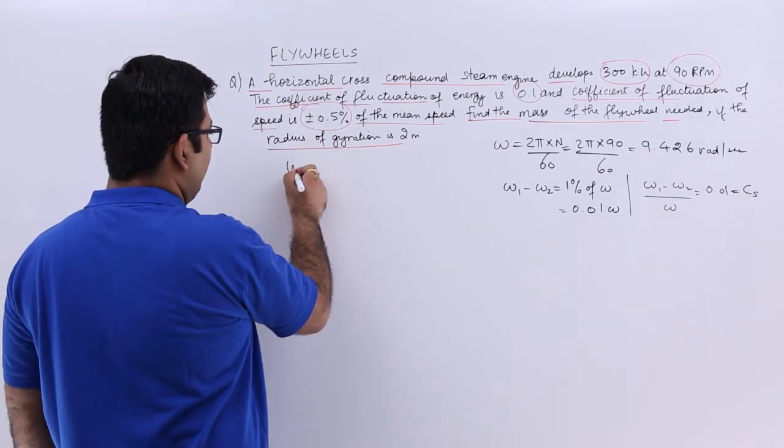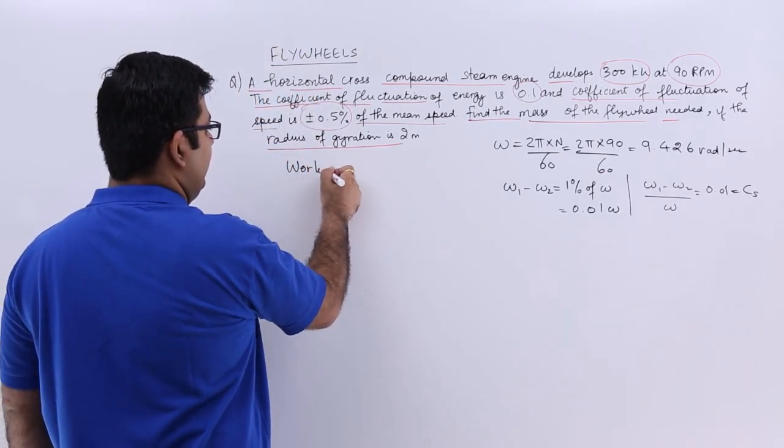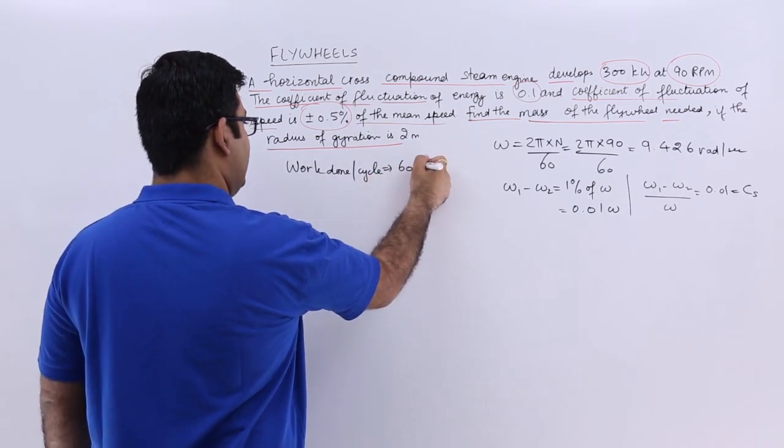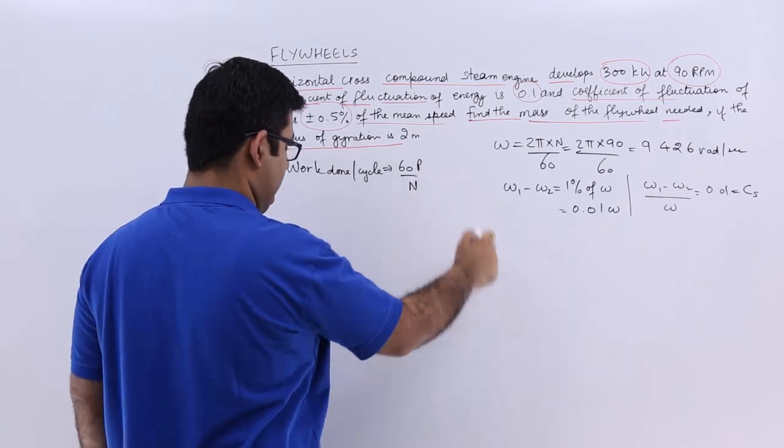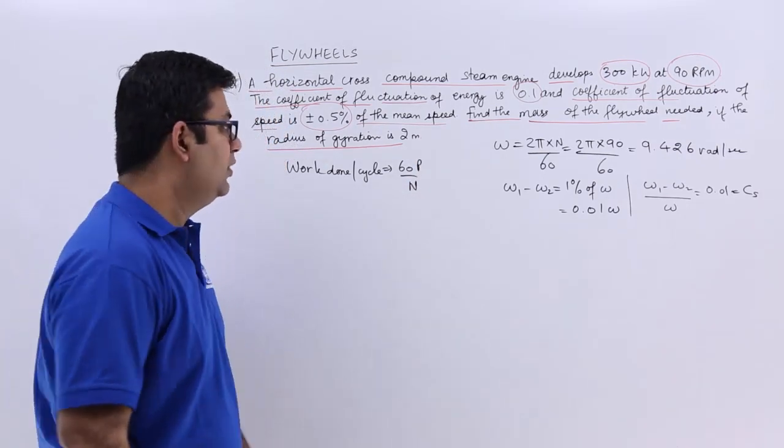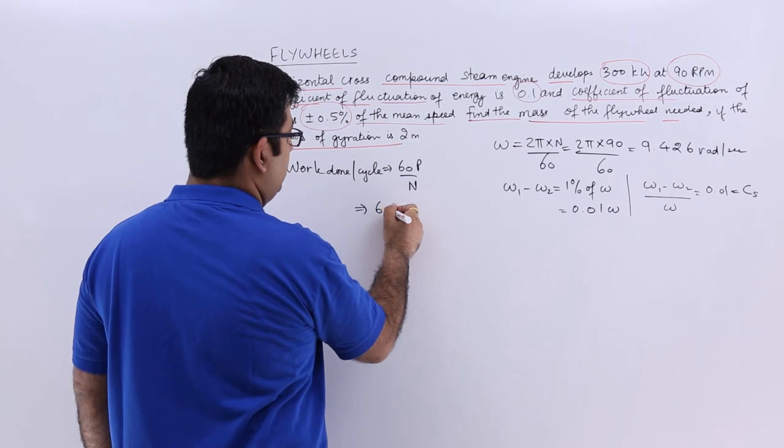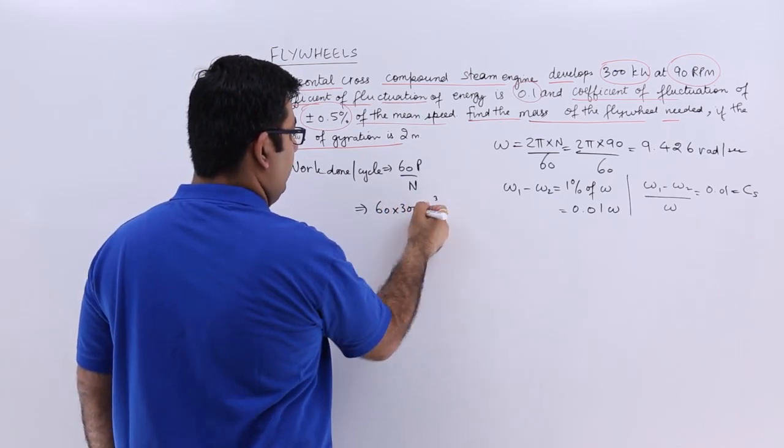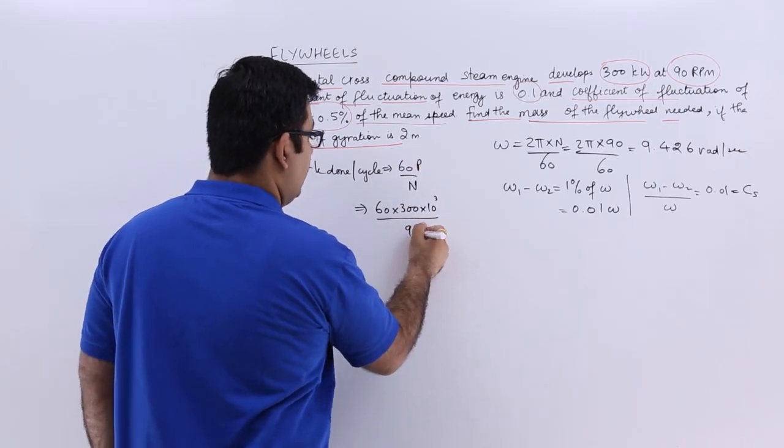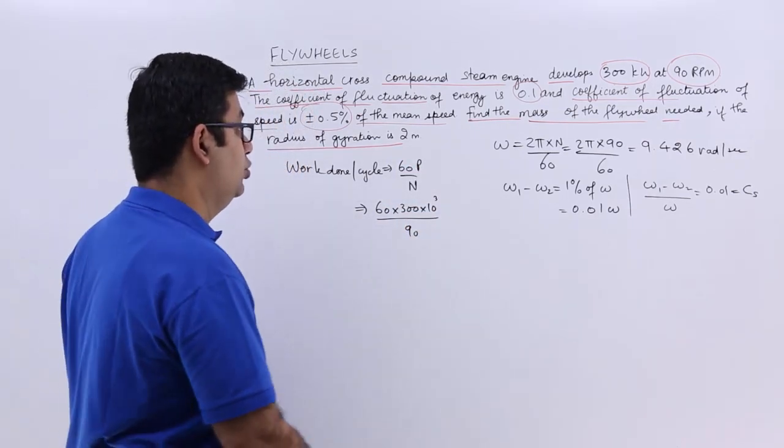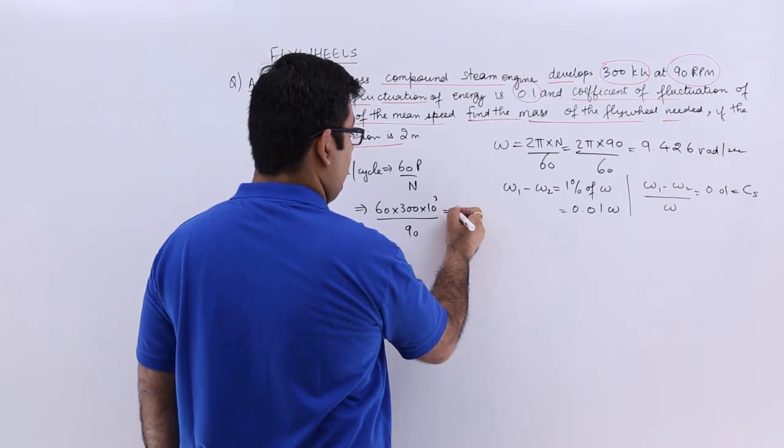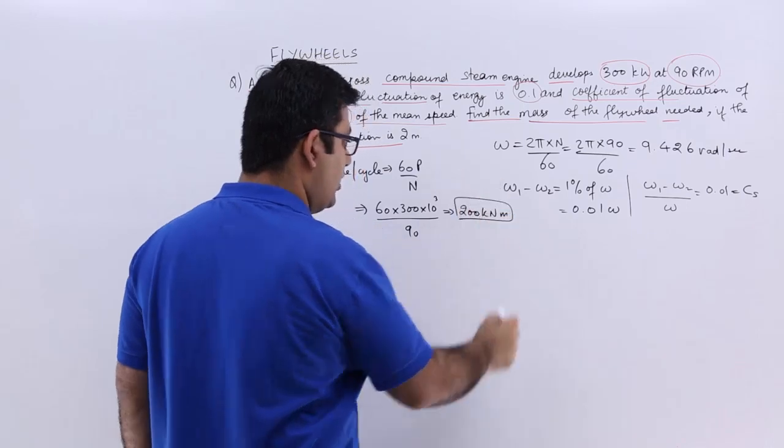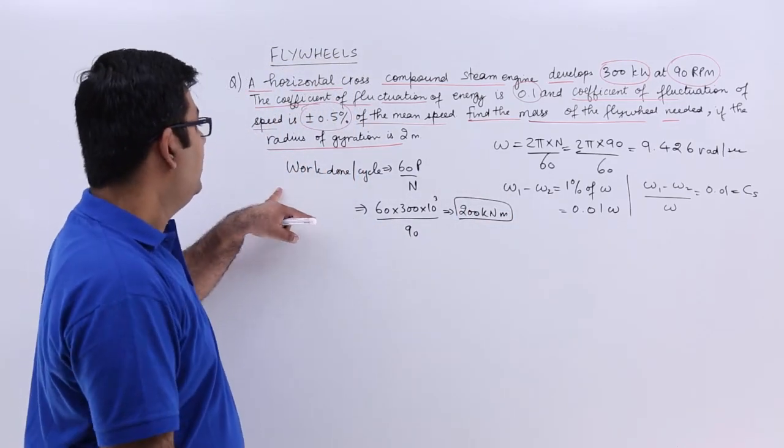Now let us calculate the work done per cycle. This is 60 times P by the rpm. So it would be 60 into 300 into 10 to the power 3 upon 90. This would be 200 kNm, the work done per cycle.